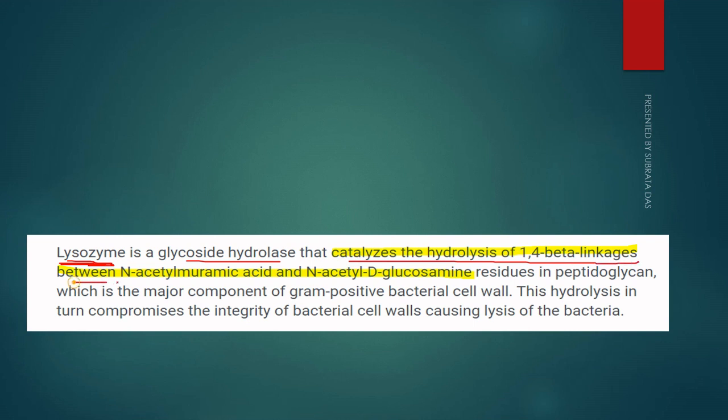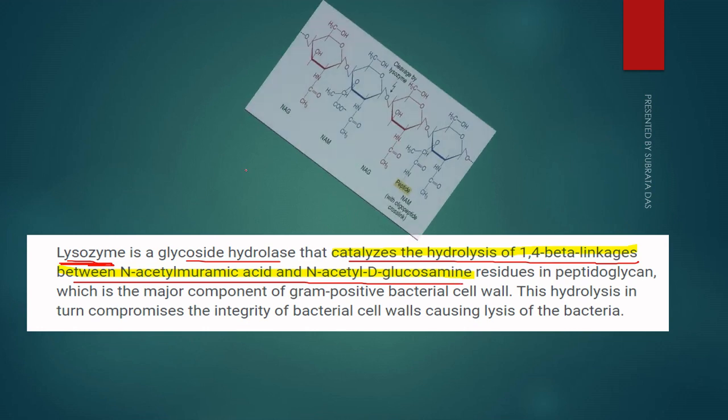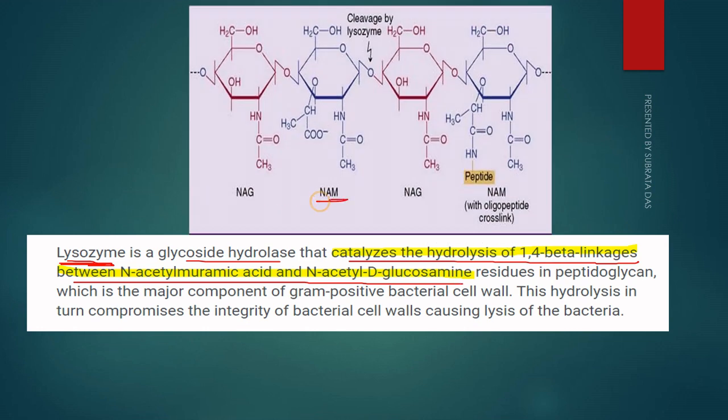Here we see the NAM structure and the NAG structure, with the first carbon and the fourth carbon positions. This is the beta linkage.